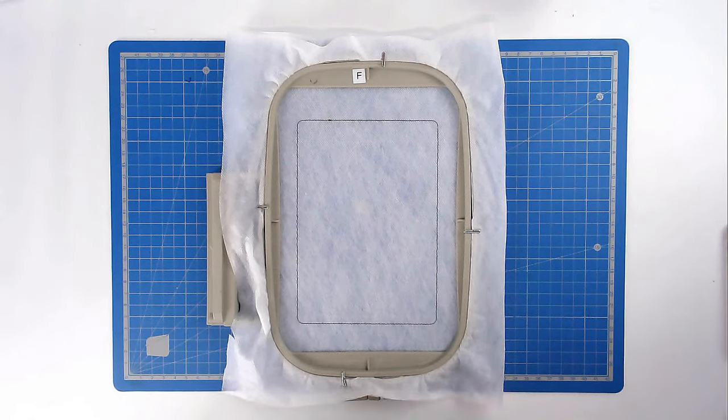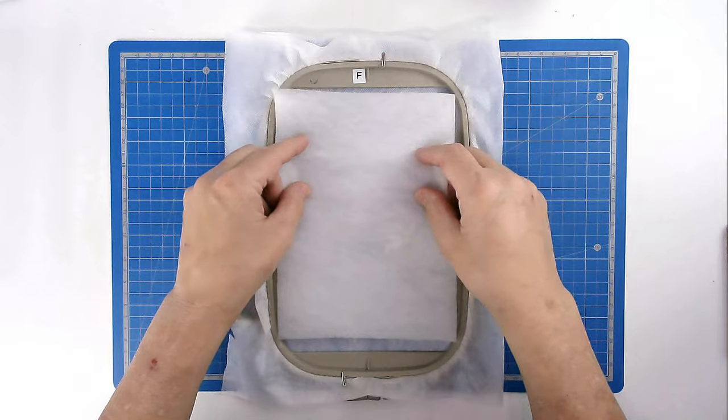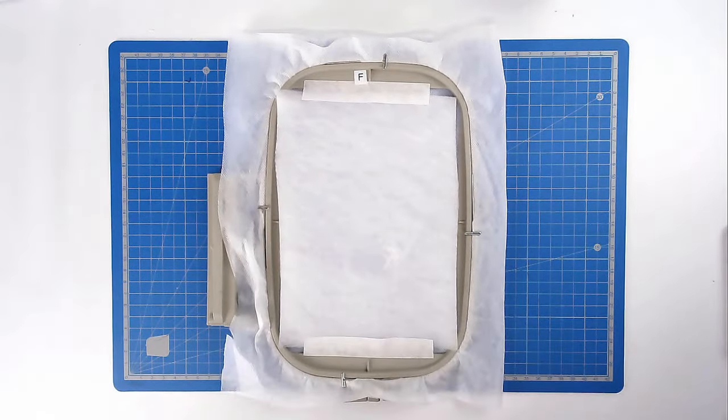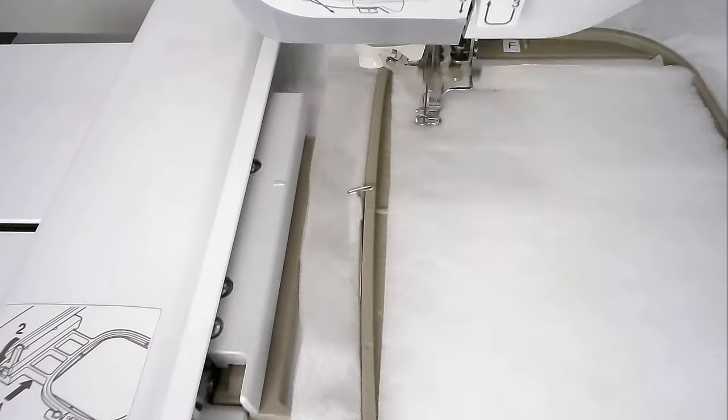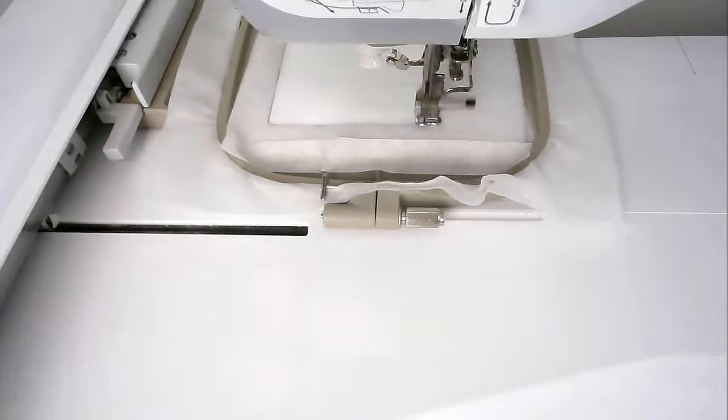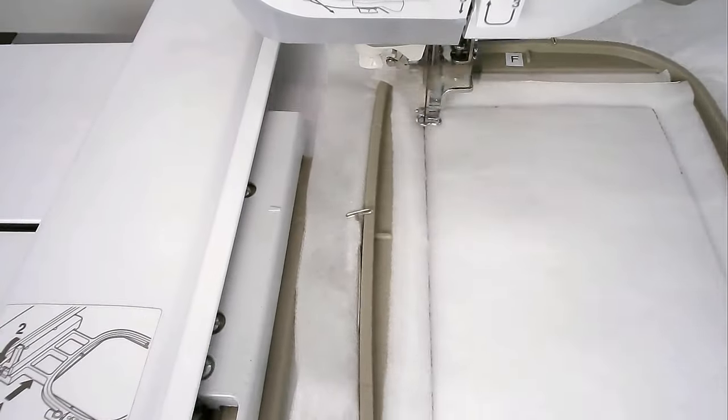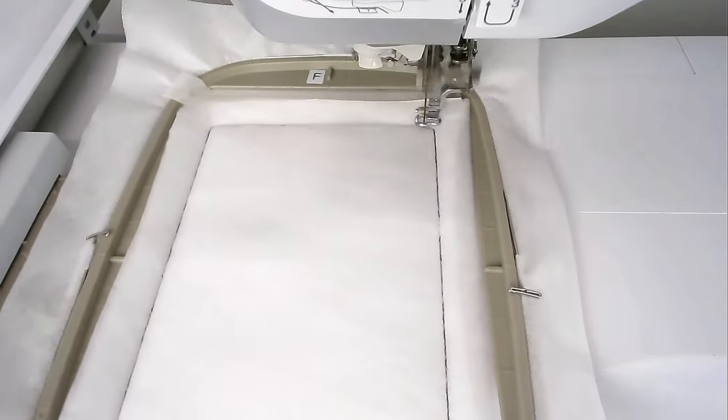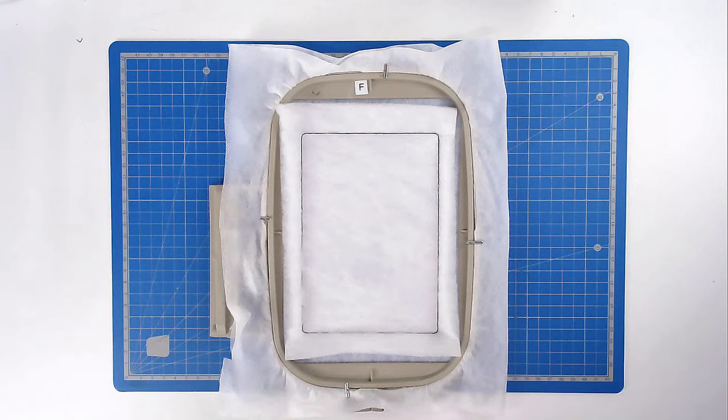Place your batting over the outline and tape it in place. Pop your hoop into your machine and stitch round number two to secure it. Trim away the excess batting from around the edge of the stitch line taking care not to cut your stitches.